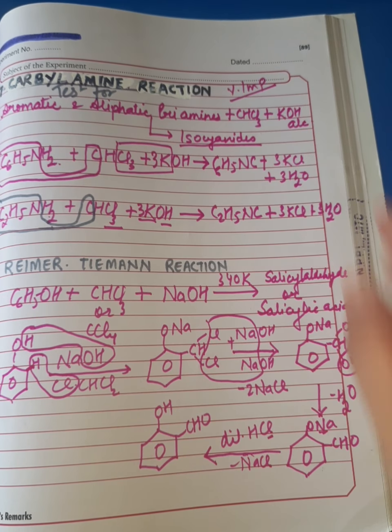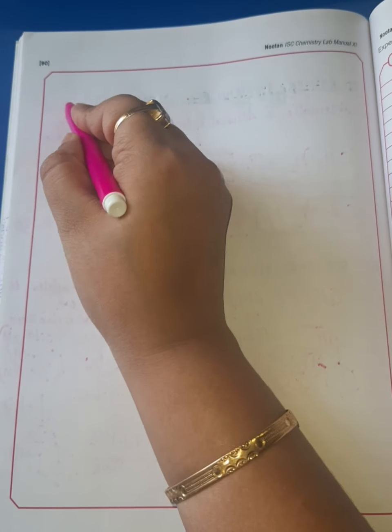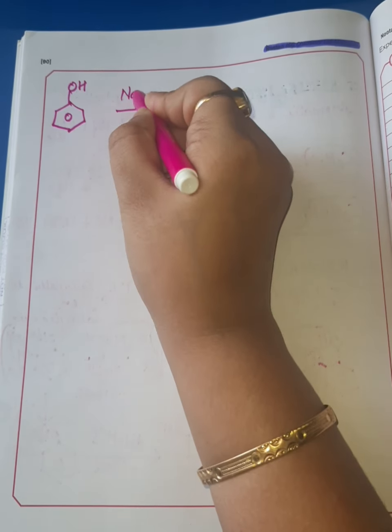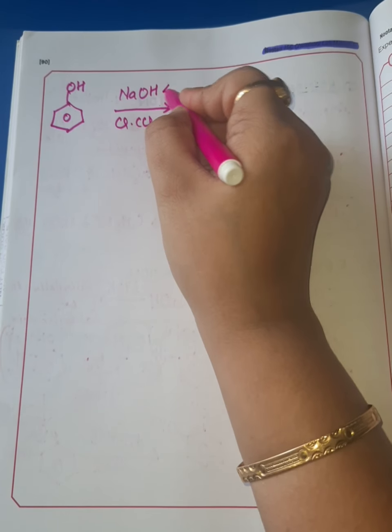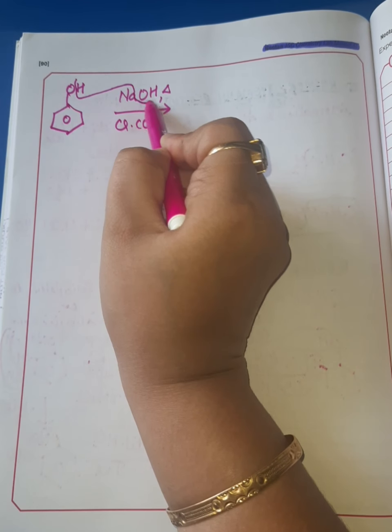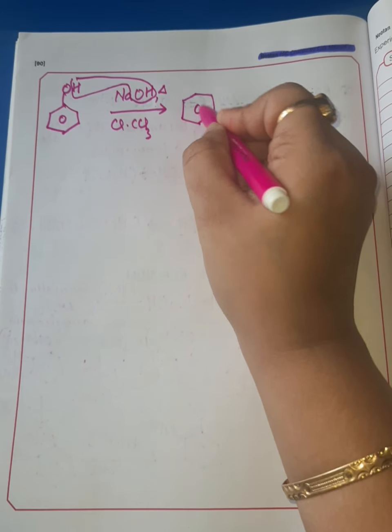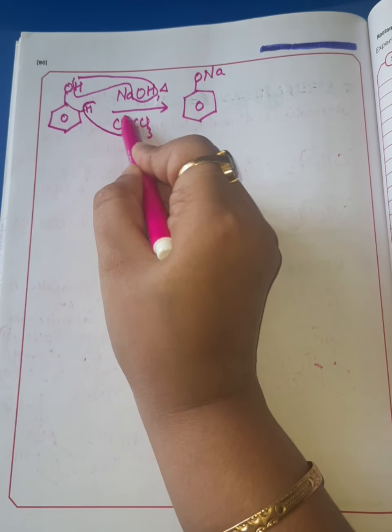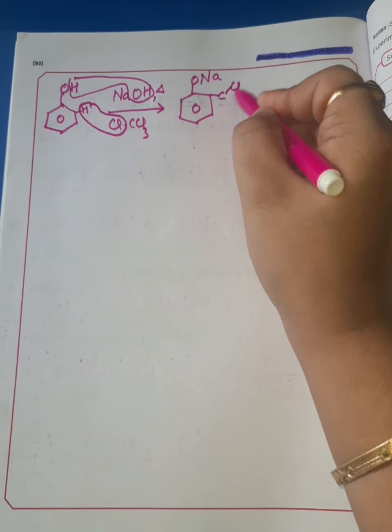Now let's see Reimer-Tiemann reaction with carbon tetrachloride. In place of chloroform, we use carbon tetrachloride. The reaction is the same. Phenol reacts with NaOH and carbon tetrachloride CCl4. H is replaced by Na, and at ortho position, ortho hydrogen gets substituted by CCl3 from the carbon tetrachloride unit.